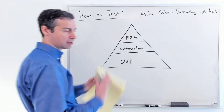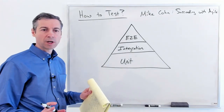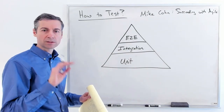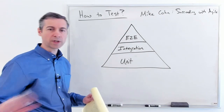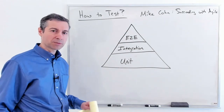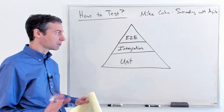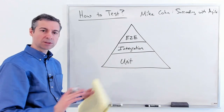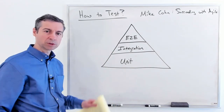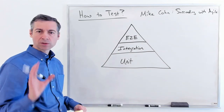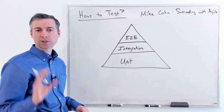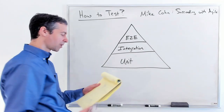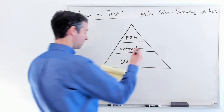End-to-end testing is about working at the user interface level, testing whole entire workflows. It's often tied to user acceptance criteria. Integration testing is at a lower level — it excludes the interface but still tests multiple components. Unit testing is down to usually a single object or a single method, isolating and testing it by itself.